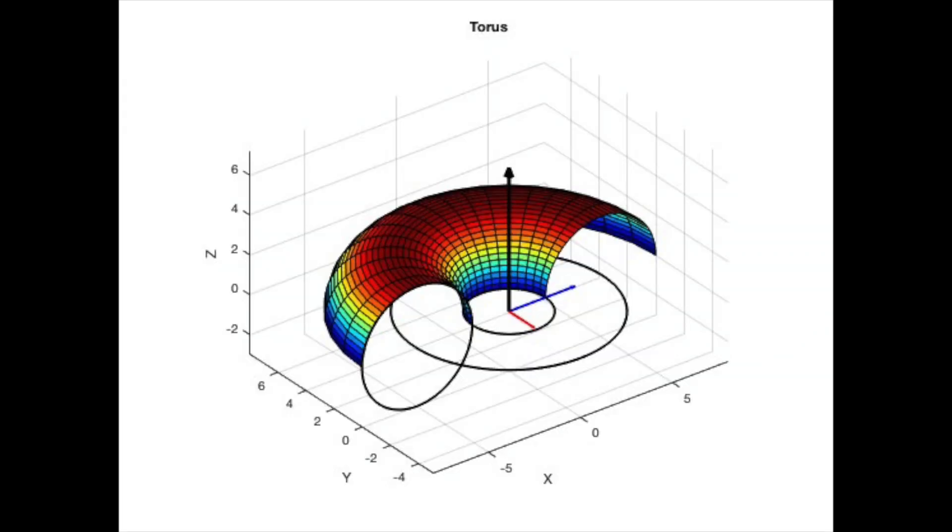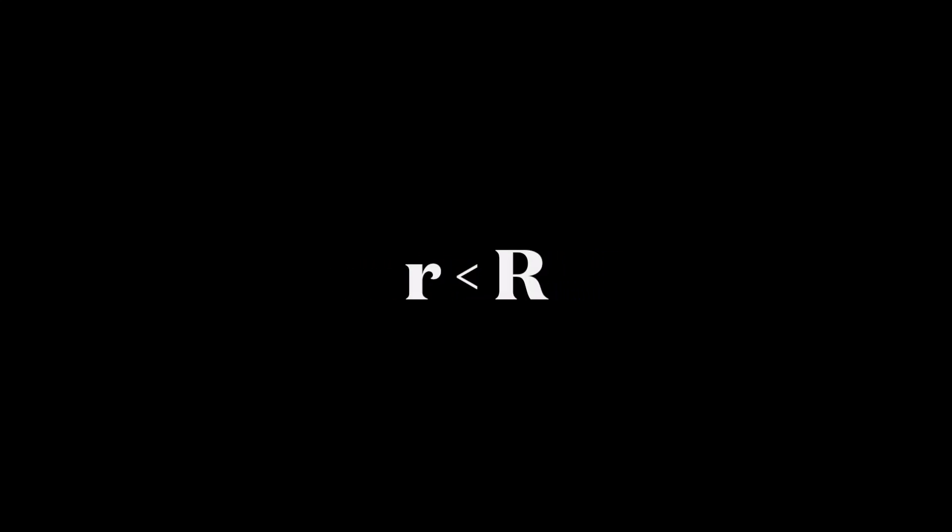One possibility of this oscillation, when small r is less than big R, is now shown in a GIF.